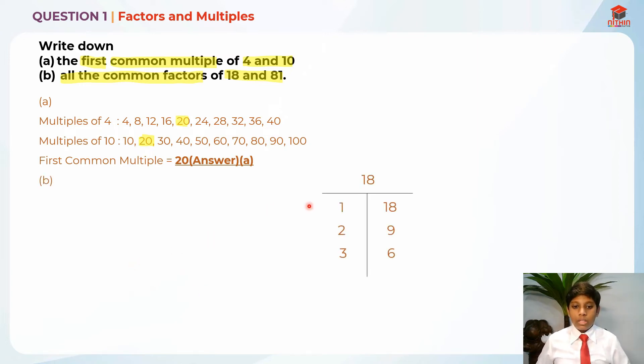In this case, what we need to do is write down the factors of 18 and 81 first. For part B, I'm going to list down the factors of 18. What you might be thinking that this line refers to is actually the times. So this line actually refers to the times.